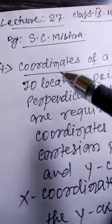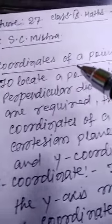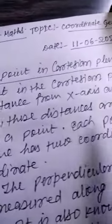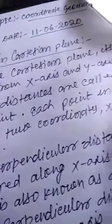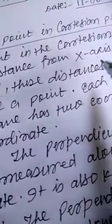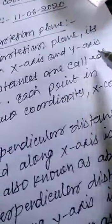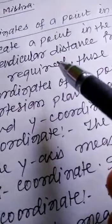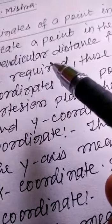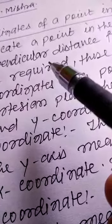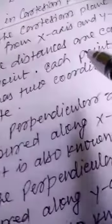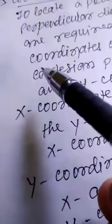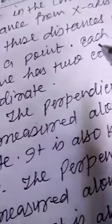Now in this video, the first point is coordinates of a point in the Cartesian plane. To locate a point in the Cartesian plane, its perpendicular distance from the x-axis and y-axis are required. If we locate a point in the Cartesian plane, we need the distance of that point from the x-axis as well as the y-axis. These distances are called coordinates of a point.